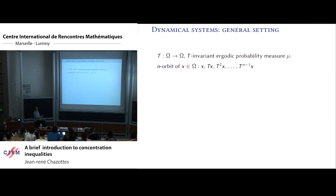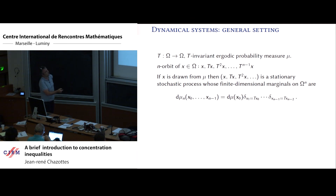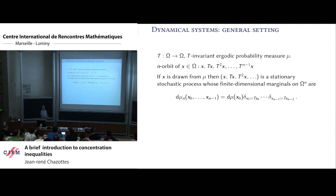To fix notation, I turn to dynamical systems. T will be my map from omega to omega, and I assume there is a T-invariant ergodic probability measure mu. An orbit of a point is the sequence x, Tx, T²x, etc. If you draw x according to mu, you get a realization of a stationary stochastic process. The finite-dimensional marginals are: randomness concentrated on the starting point distributed according to mu, then products of Dirac measures along the orbit.